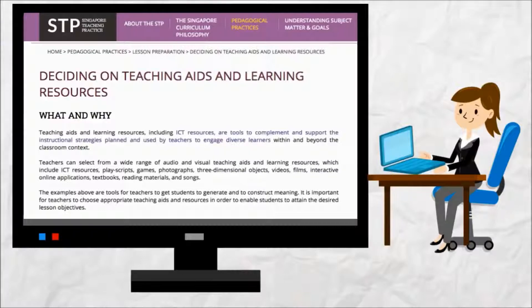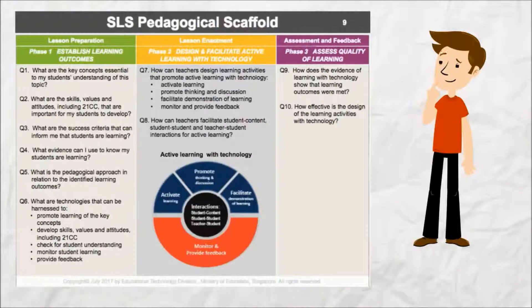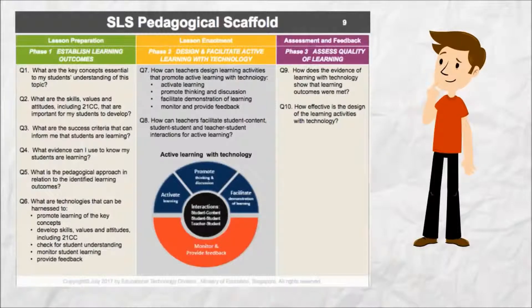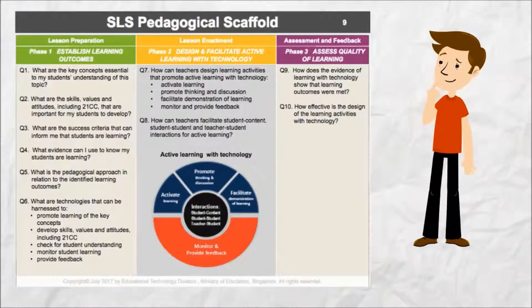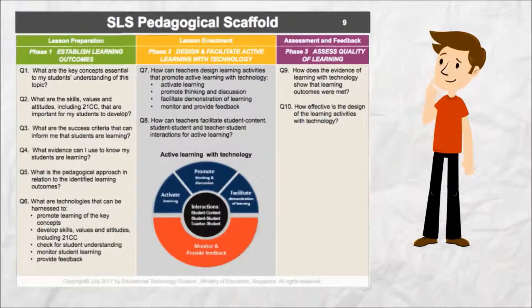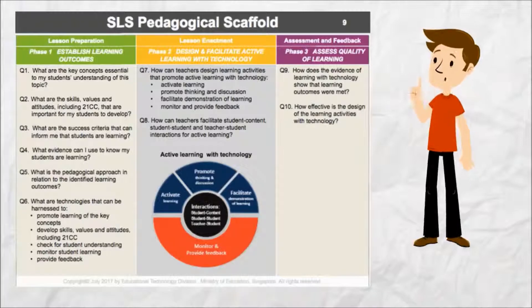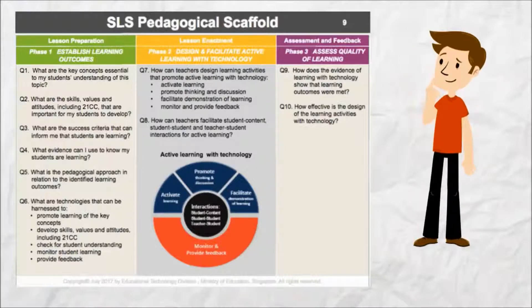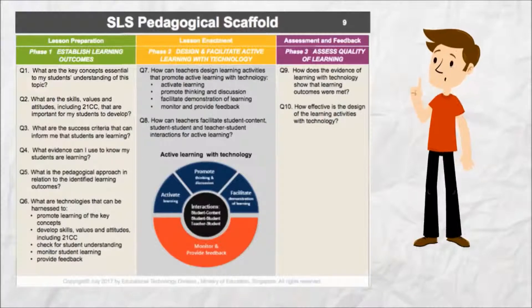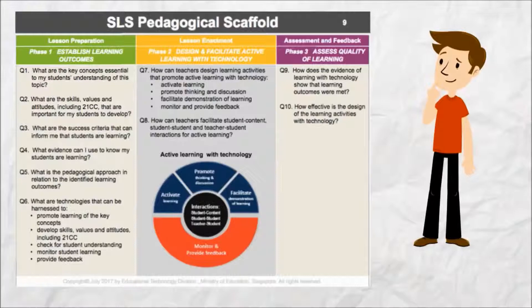However, how do we use these considerations? I see these considerations in the SLS pedagogical scaffold. The SLS pedagogical scaffold is a design tool that provides us with a way to think about using technology for active learning. The three design phases consist of questions for teachers to consider the learning outcomes, the type of activities, the role of technology in these activities, and the expected evidence of learning when designing technology-enriched lessons.